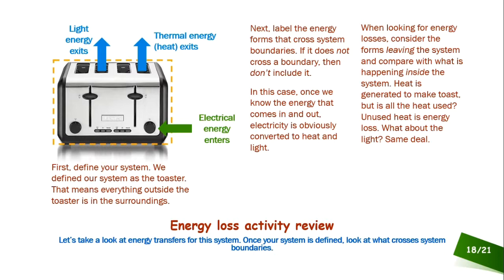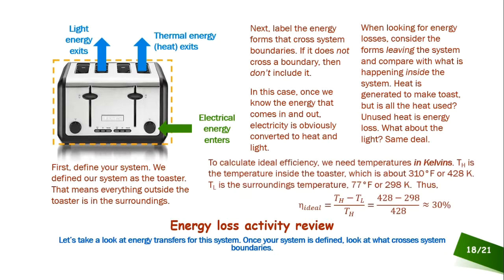Similarly, light energy coming out has nothing to do with toasting the bread — it's completely unavailable energy. So energy losses occur in the form of both heat and light, with more energy being lost and unavailable than is actually available to do the work. To calculate ideal efficiency, we must first convert from Fahrenheit to Kelvin, since the Carnot efficiency equation requires temperatures in Kelvin.